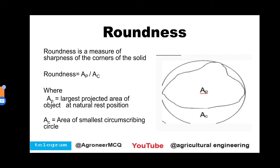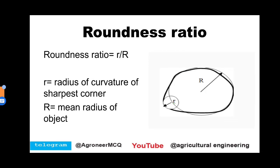Roundness is the projected area divided by the circumscribing area. Roundness ratio equals small r divided by capital R, where small r is the radius of curvature of the sharpest corner — we draw a circle at the sharpest corner and measure its radius — and capital R is the mean radius of the object, calculated by drawing a circle covering almost all sides of the projected fruit or vegetable.